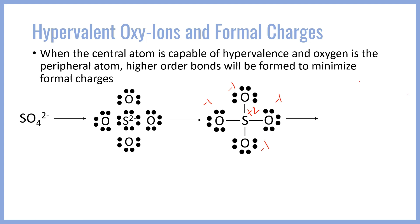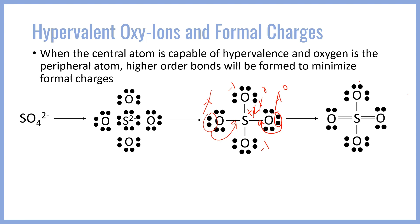Let's take this lone pair from one oxygen and fold it into a double bond. That will reduce the formal charges from plus two and minus one to plus one and zero. However, plus one is still not zero, so we fold another lone pair into the sulfur to reduce its formal charge to zero. That gives us the final structure where the oxygen atoms on top still carry formal charges, but everything else has been reduced to zero — which is preferred. The overall Lewis structure is given with brackets and a 2- charge, where the formal charges add up to the overall ion charge.